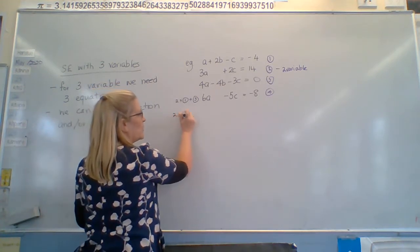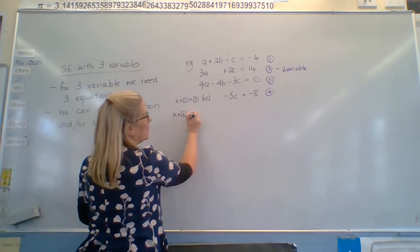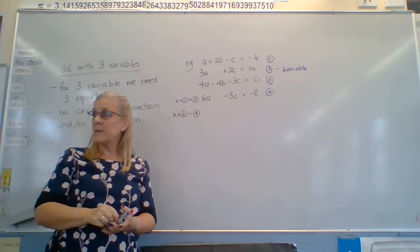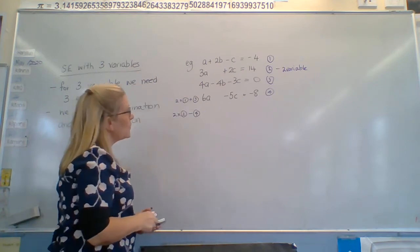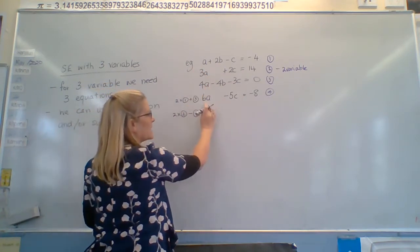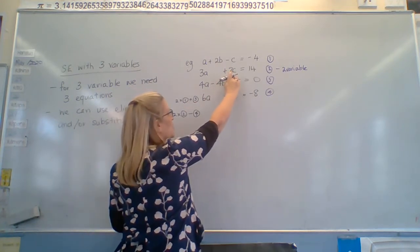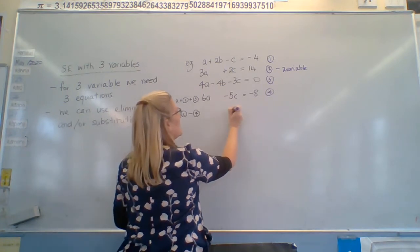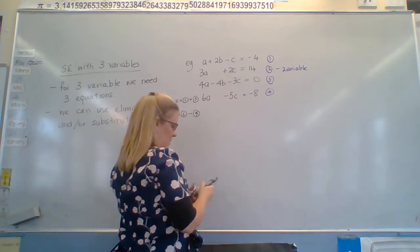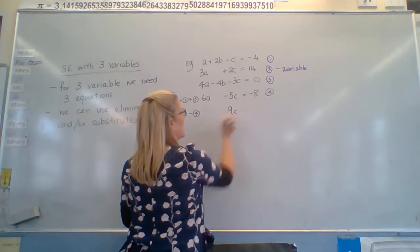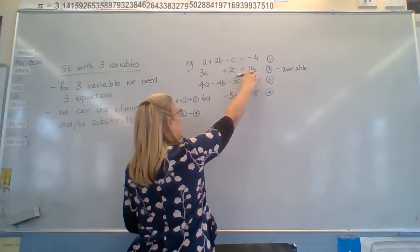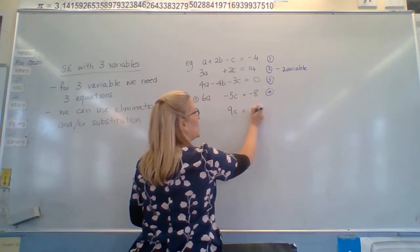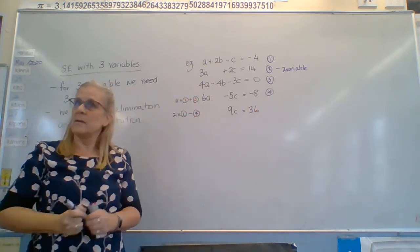We're going to multiply this one by two. So two times two and minus four to get rid of the six a. Yeah? Yeah. Okay. So we've got six a minus six a is no a's. Two times two is four minus minus five is plus. So we've got nine c. Two times fourteen is twenty-eight minus minus eight. Twenty-eight plus eight equals thirty-six.